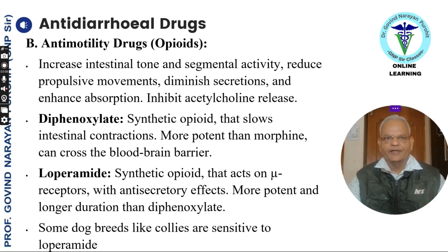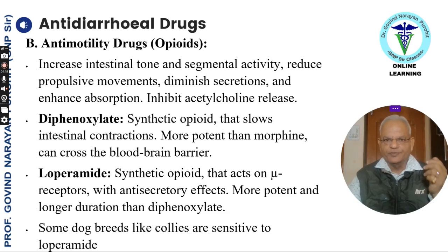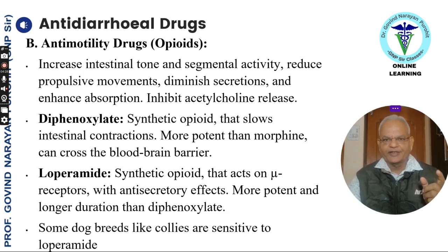Anti-motility drugs increase intestinal tone and segmental activity. Opioids reduce propulsive movements, diminish secretions, enhance absorption, and inhibit acetylcholine release. Diphenoxylate is a synthetic opioid that slows intestinal contractions — it is more potent than morphine and can cross the blood-brain barrier. Loperamide is a synthetic opioid that acts on mu-receptors with anti-secretory effects; it is more potent and has a longer duration than diphenoxylate.